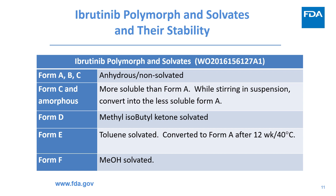Ibrutinib polymorphs, solvates, and their stabilities are reported in a 2016 patent. Polymorph forms A, B, and C are anhydrous non-solvated, while forms D, E, and F are solvated polymorphs with different solvents such as methyl isobutyl ketone, toluene, or methanol. Among all these polymorphs, form A is more stable than the others.